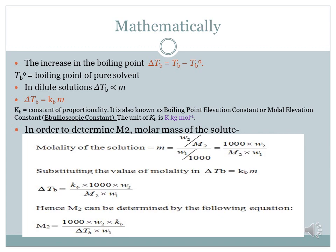In a dilute solution, ΔT_B is directly proportional to its molality. Removing the proportionality sign: ΔT_B = K_B × m, where K_B is the constant of proportionality, also known as the boiling point elevation constant, molar elevation constant, or ebullioscopic constant. The unit of K_B is K·kg per mol.